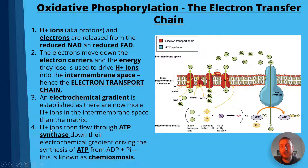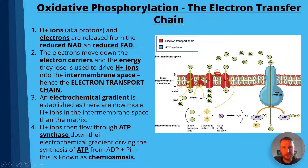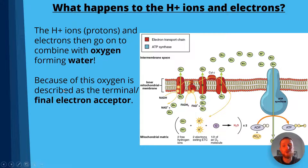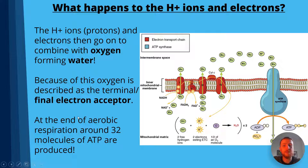Step four: the H+ ions flow through ATP synthase, a membrane-bound enzyme, down their electrochemical gradient, driving the synthesis of ATP from ADP plus inorganic phosphate. This is known as chemiosmosis. The protons and electrons then combine with oxygen to form water, which is why oxygen is described as the terminal or final electron acceptor — and you need to know that for AQA A-Level Biology. At the end of aerobic respiration, around 32 molecules of ATP are produced.